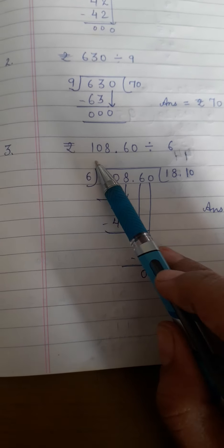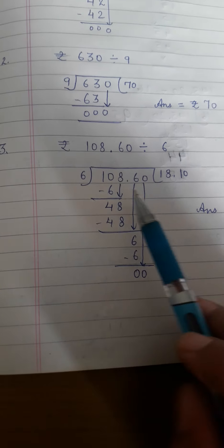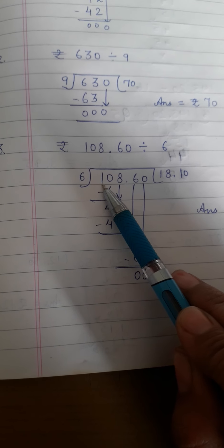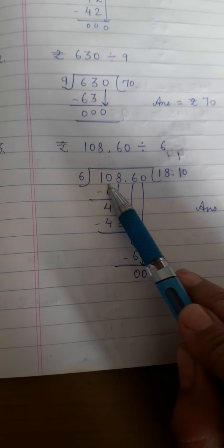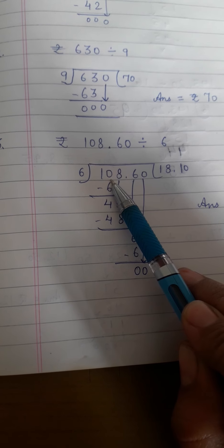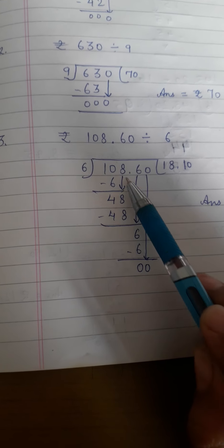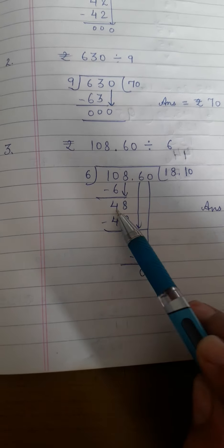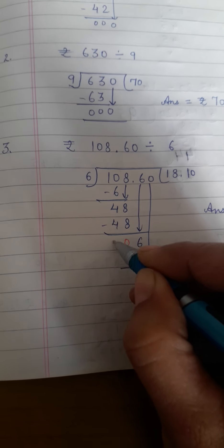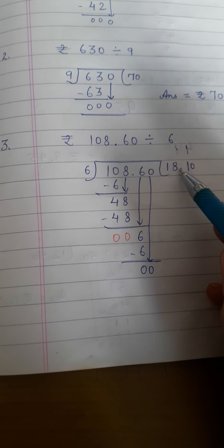Now third question. Rupees 108.60 paisa divided by 6. You have to divide this by 6. So check first digit. It's smaller. So you will speak table for 2 digits. 6 ones are 6, 6 twos are 12. 12 is bigger than 10. So 6 ones are 6 will go. 10 minus 6 is 4. Bring down 8 from top. 6 eights are 48. Then minus. You get 00. Next is decimal. When decimal comes, put decimal in the question first.